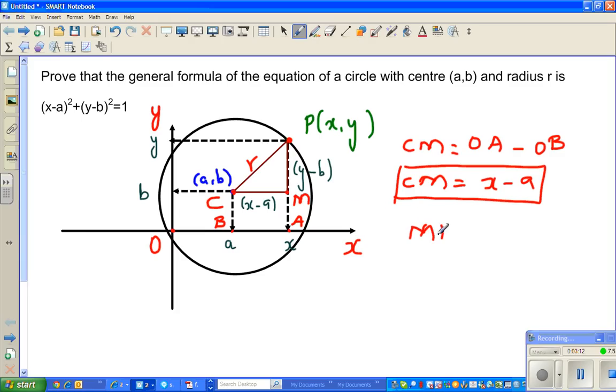So I can say that MP, this distance MP is OA minus MA. I hope it is clear. So MP is, what is OA? This is my OA. So this is PA, this distance minus MA.